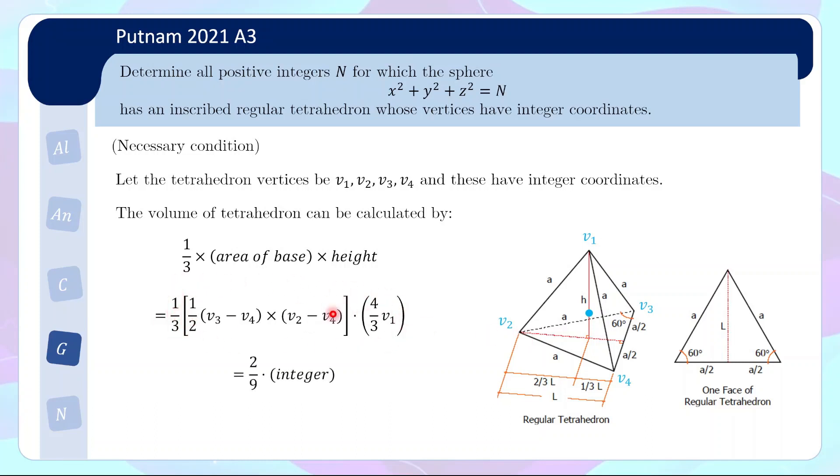Now, if I collect the fractions together, I'll have 2/9. And then we have cross product of vectors dot product into another vector. And all of them have integer coordinates. So what we end up with is an integer number. So the volume is 2/9 times an integer. But at the same time, we can do some 3D geometry. It's not too complicated about AIME type of manipulations. To conclude that the volume of a tetrahedron inscribed in a sphere of radius r is given by 8√3/27 r³. So now we recall that r is equal to √n. And then we equate these two.